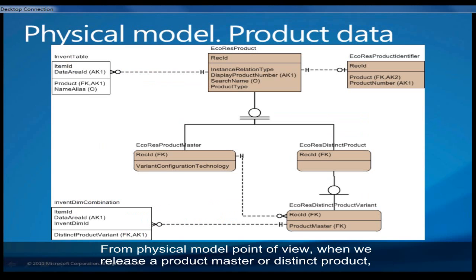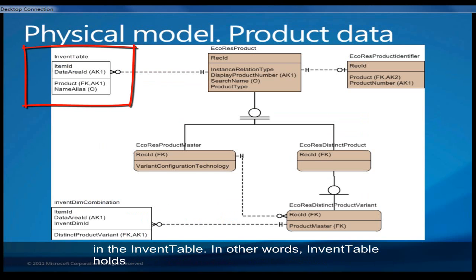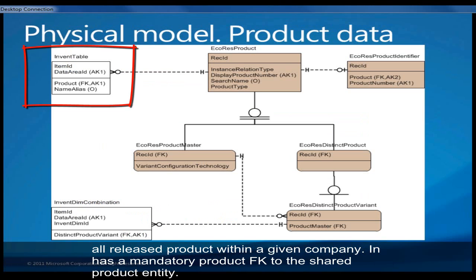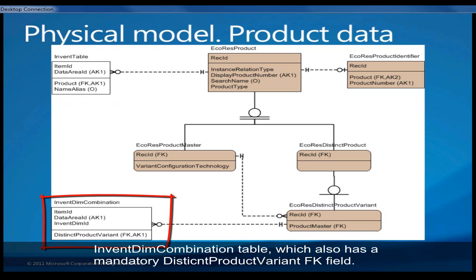From a physical model point of view, when we release a product master or distinct product, you will have a new entry or a new record in the InventTable. In other words, InventTable holds all released products within a given company, and as you can see it has a mandatory product foreign key to the shared product entity. Every time we release a distinct product variant, we will have a new entry in the company-specific InventDimCombination table, which also has a mandatory distinct product variant foreign key field.